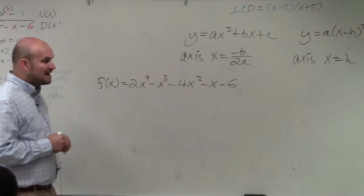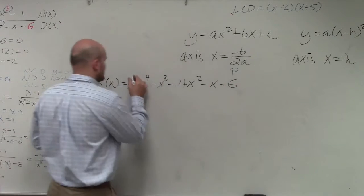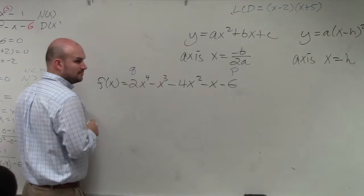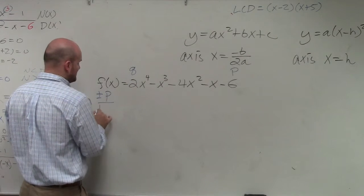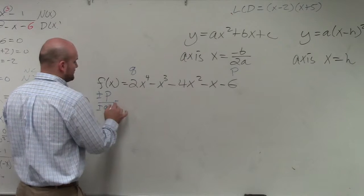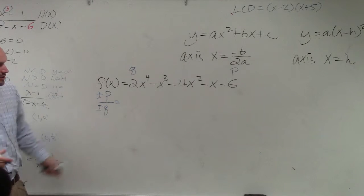So to find all the rational zeros, all you simply do is take the factors of p over the factors of q. So plus or minus the factors of p over plus or minus the factors of q. All you simply do is just factor p and then factor q.